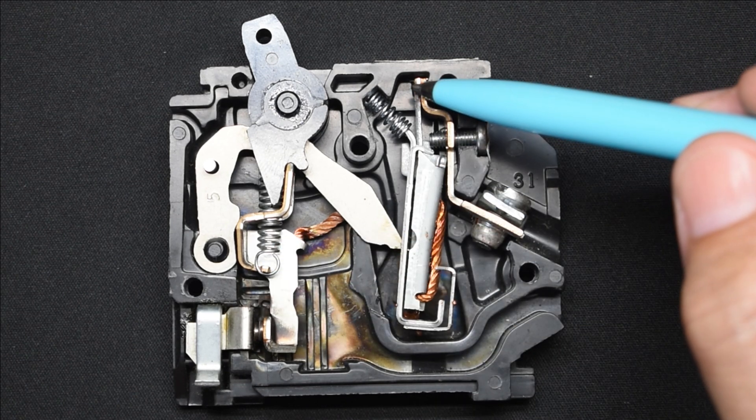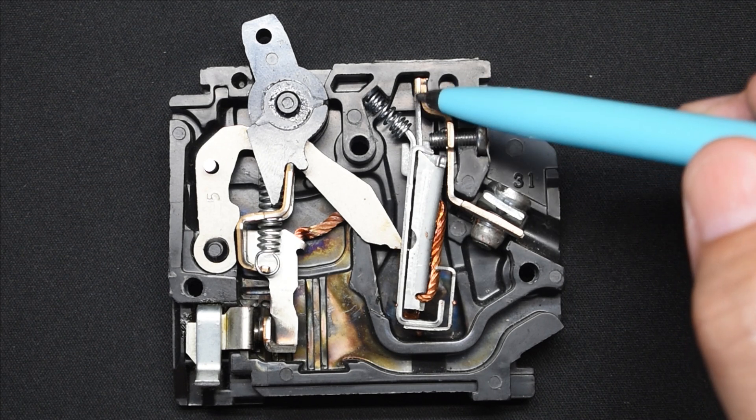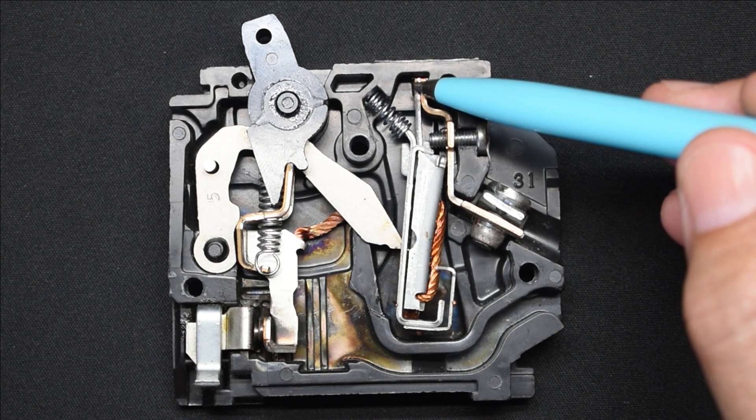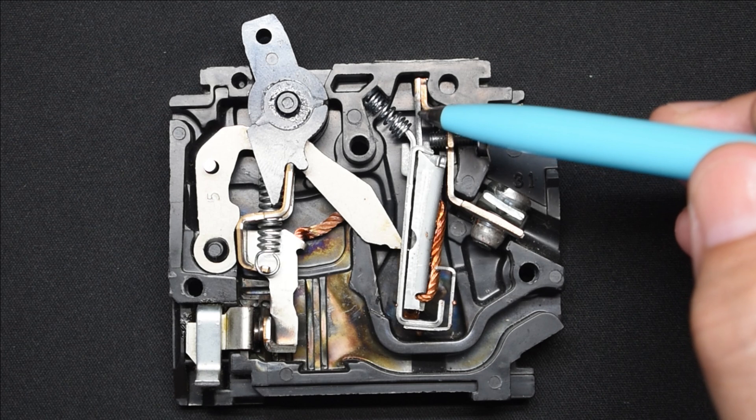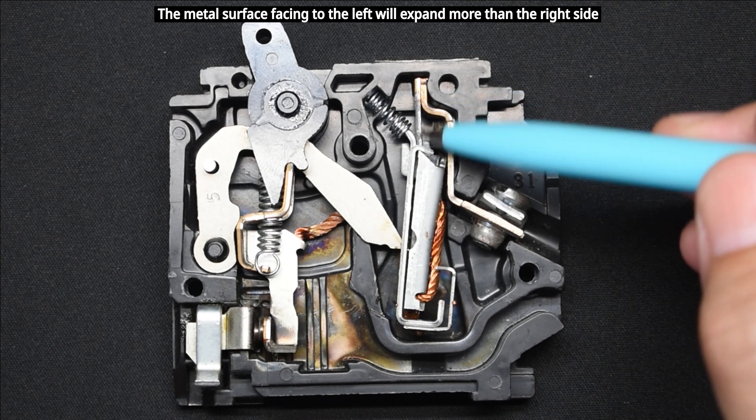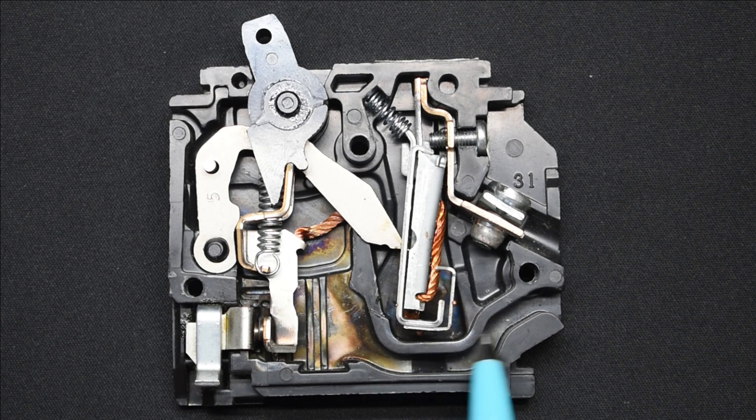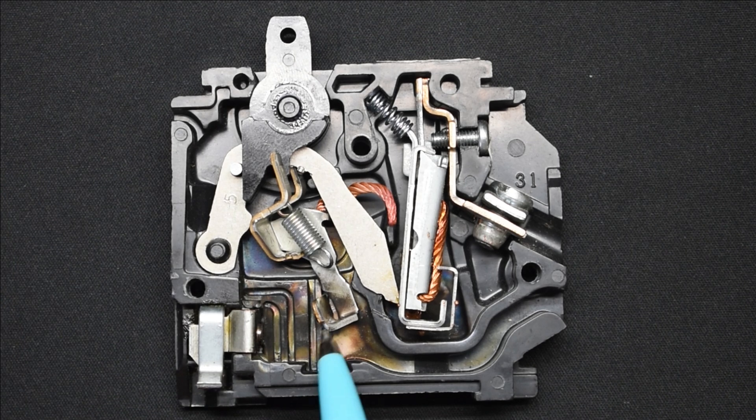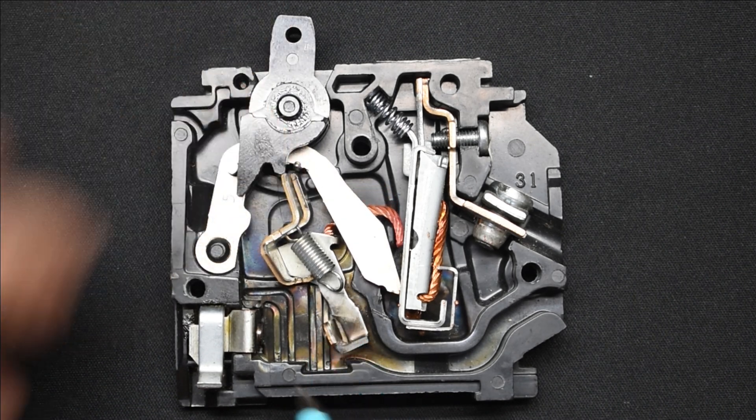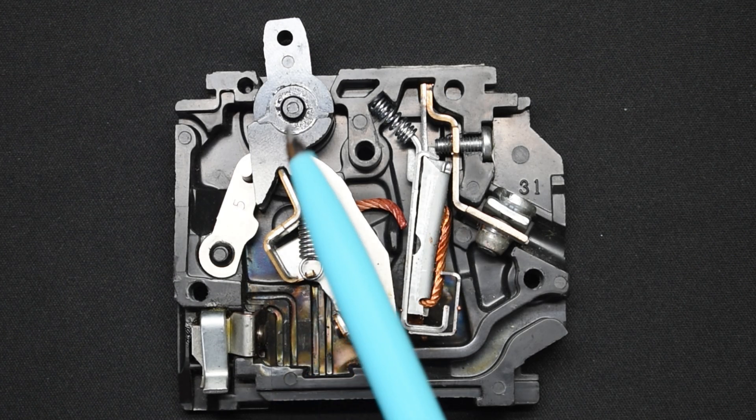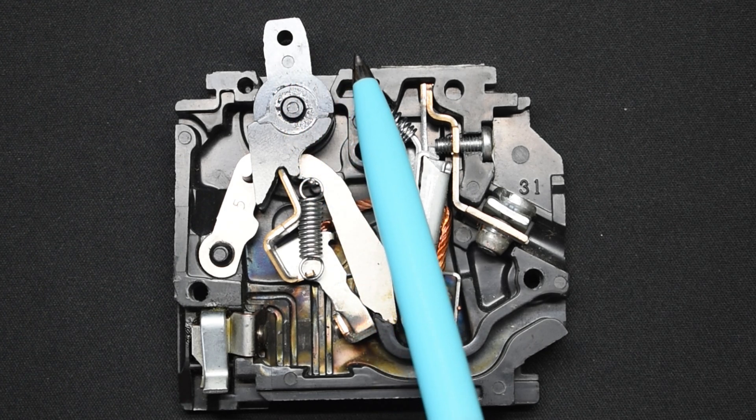When current flows through this strip, it's going to heat up. It gets hotter and hotter as it nears the rating for the breaker, and because it's two dissimilar metals, they're going to expand differently when heated. One is going to expand more than the other, and when that expansion occurs it's going to cause this whole piece right here to flex in this direction. When it flexes in that direction it trips, and you can see the circuit opens up and the contact between here is no longer being made.